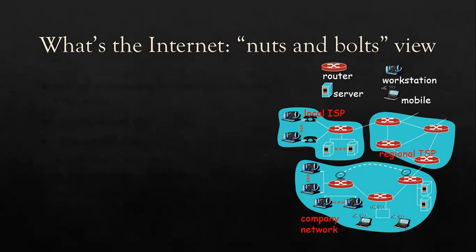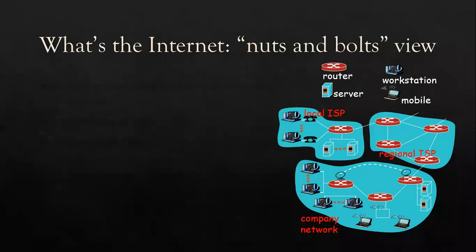Let's suppose my head office is in Lahore and I am sitting here in Rawalpindi. From Rawalpindi to Lahore, there are going to be many routers. I am going to pass the data to my company network. This is in a local area network. There are multiple workstations, multiple routers, multiple servers, and multiple mobile stations — basically internet network.